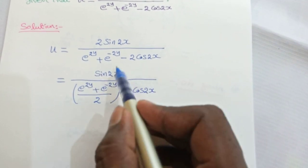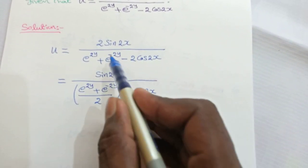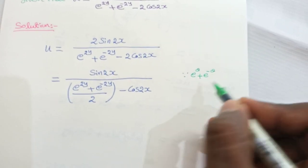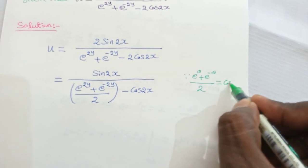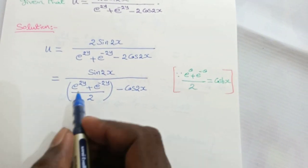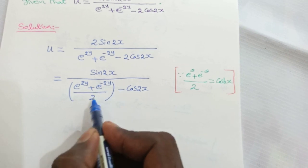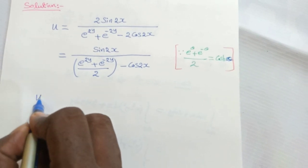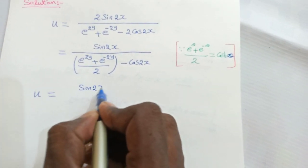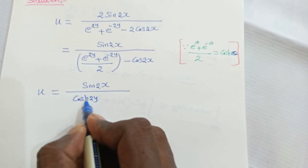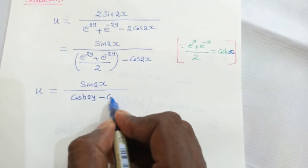The denominator divided by 2 is split into two terms, with the 2 cancelled. Using the formula (e^θ + e^(-θ))/2 = cosh(θ), we can rewrite the expression. So u = sin(2x) / (cosh(2y) - cos(2x)).